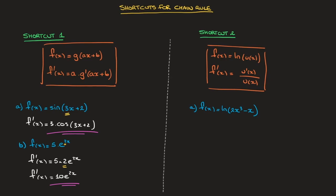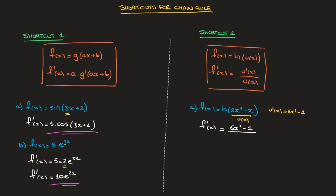To illustrate that, let's work through the example we have here. We need to differentiate f of x which is equal to ln of 2x cubed minus x. We're dealing with a composite function that can be thought of as ln of u of x. If I call this inner function u of x, then u dash of x equals 6x squared minus 1. Using this result, f dash of x, the derivative, is equal to u dash of x over u of x — in other words, 6x squared minus 1 over 2x cubed minus x. And that's the answer.